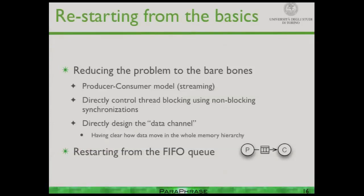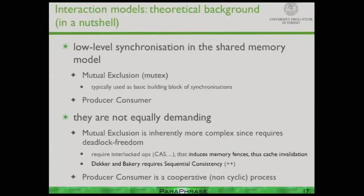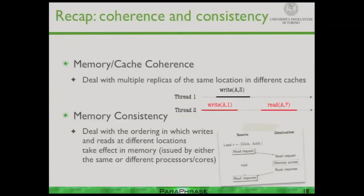The FIFO queue can be used for many things: building send/receive, sharing memory, synchronization, and whatever else. It's important to notice that producer-consumer is not equally demanding as mutual exclusion. As Maurice Herlihy describes in his book, mutual exclusion truly needs atomic operations — you cannot implement it without them — while producer-consumer can be done without, because producer-consumer has a natural master-slave relationship with no cycles and no competition.